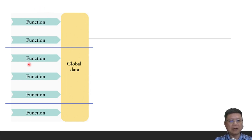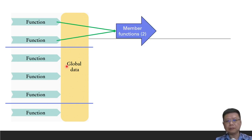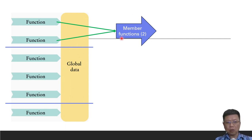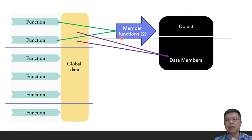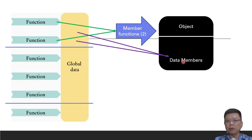Let's say we have 6 functions. We find that the first two functions have the same characteristics, and then the third, fourth, and fifth have the same characteristics or features, so we can group them. With this, we can create member functions — meaning that we group them and call them member functions.